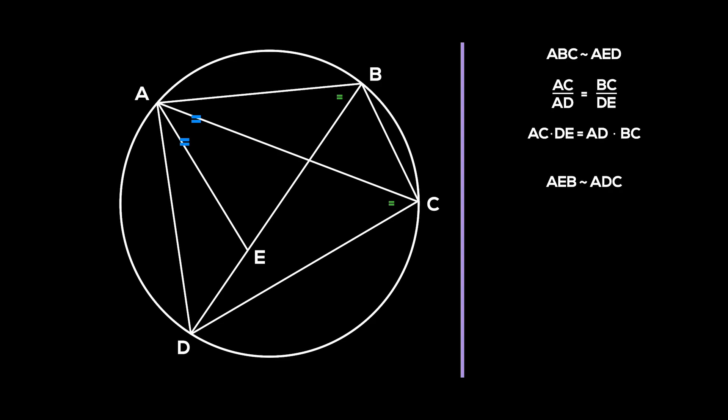Similarly, by comparing their sides, we get the relation AC over AB is equal to DC over EB. Thus, by crossing over, we get AC times EB is equal to AB times DC.